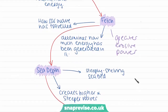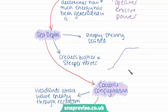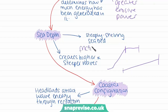The next factor is sea depth. Where we have a steeply shelving seabed — meaning the seabed dips off and becomes very deep very quickly from the coastline — this creates higher and steeper waves. Whereas if the coastline has a more gradual incline, the waves lose their energy much further away from the coastline due to increased friction. So if the sea is deeper closer to the coastline, we get higher and steeper waves with greater erosive power.